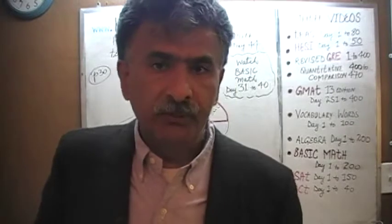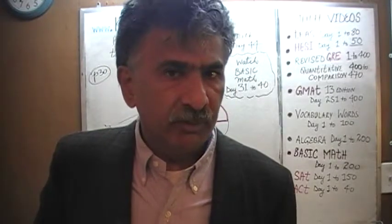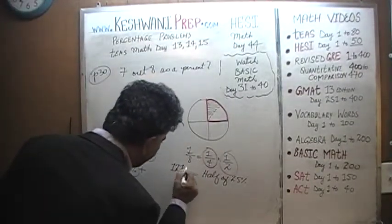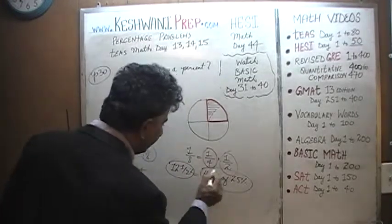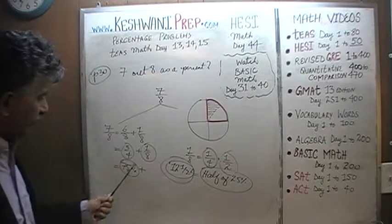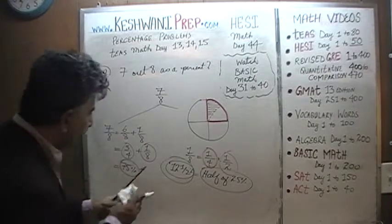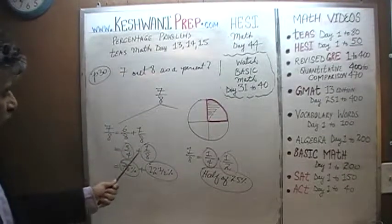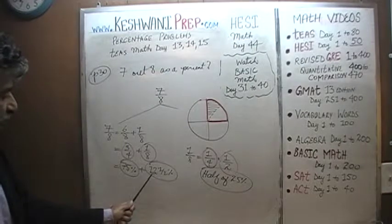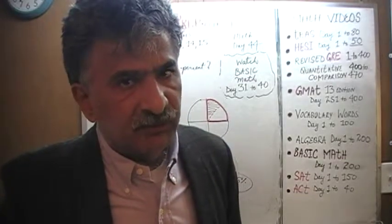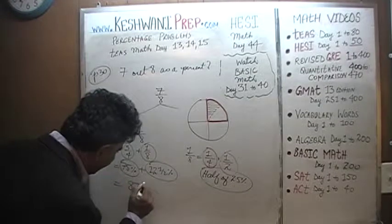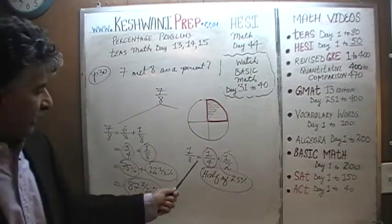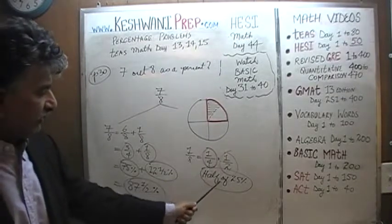What is half of 25? Half of 24 would be exactly 12, so half of 25 percent has to be 12 and a half percent. One 8th is 12 and a half percent. So we have 75 percent from 6/8, and 1/8 is 12 and a half percent. 6/8 plus 1/8 — which is 3 quarters plus 1/8 — is 75 percent plus 12 and a half percent. 75 plus 10 is 85, and then another 2 is 87 — it's 87 and a half percent. You must understand that 1/8 is simply half of 25 percent.